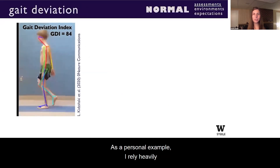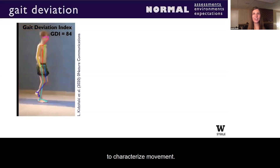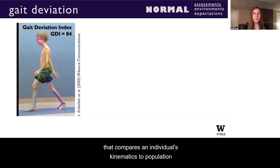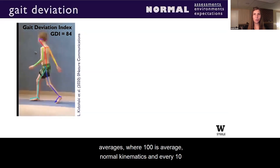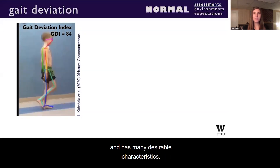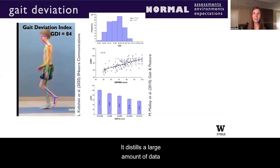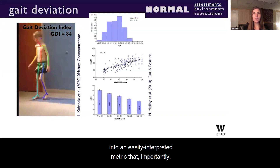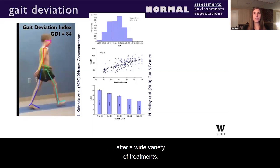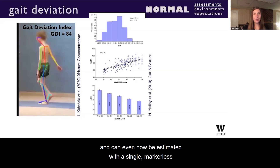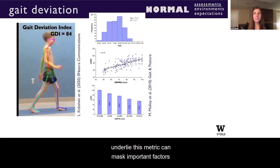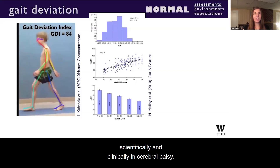As a personal example, I rely heavily on metrics like the gait deviation index to characterize movement. The gait deviation index is a z-score that compares an individual's kinematics to population averages, where 100 is average normal kinematics and every 10 points represents a standard deviation from average. This metric has been widely used and has many desirable characteristics — it distills a large amount of data into an easily interpretable metric that is associated with function, predictive of outcomes after a wide variety of treatments, and can even now be estimated with a single markerless video.